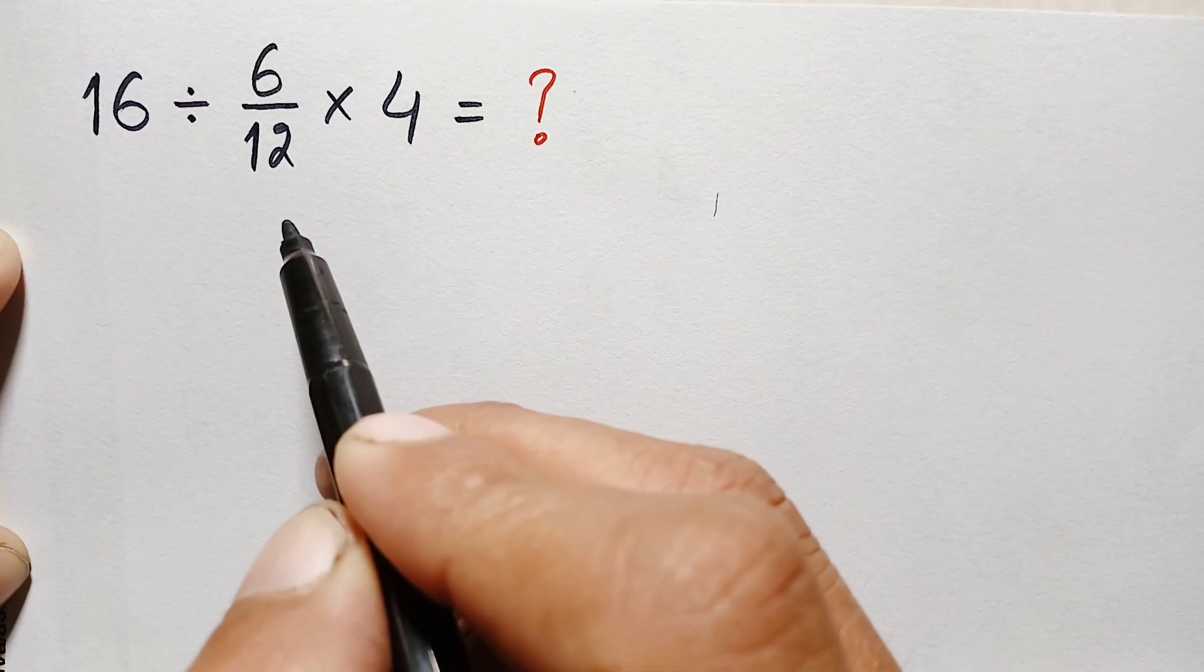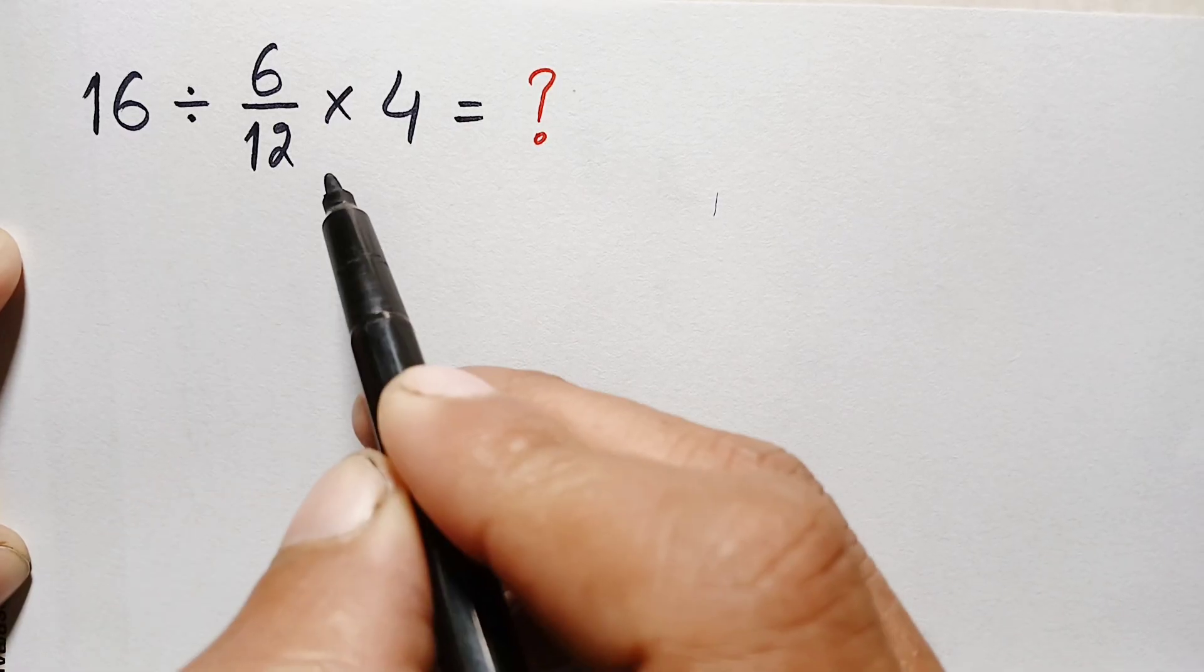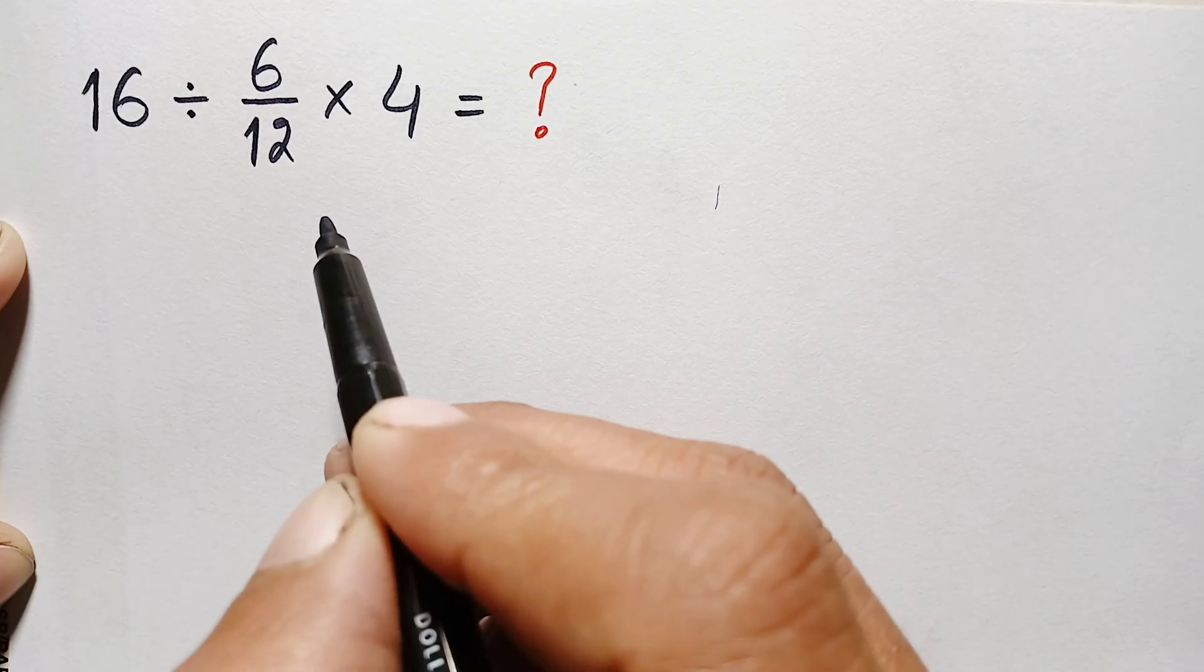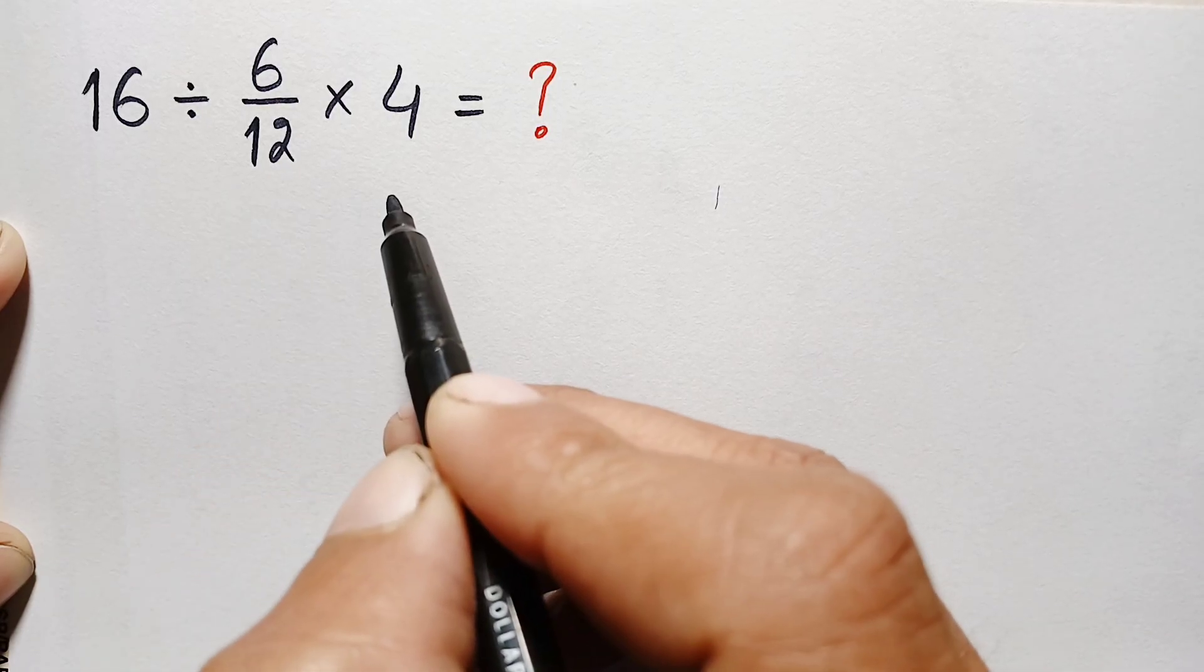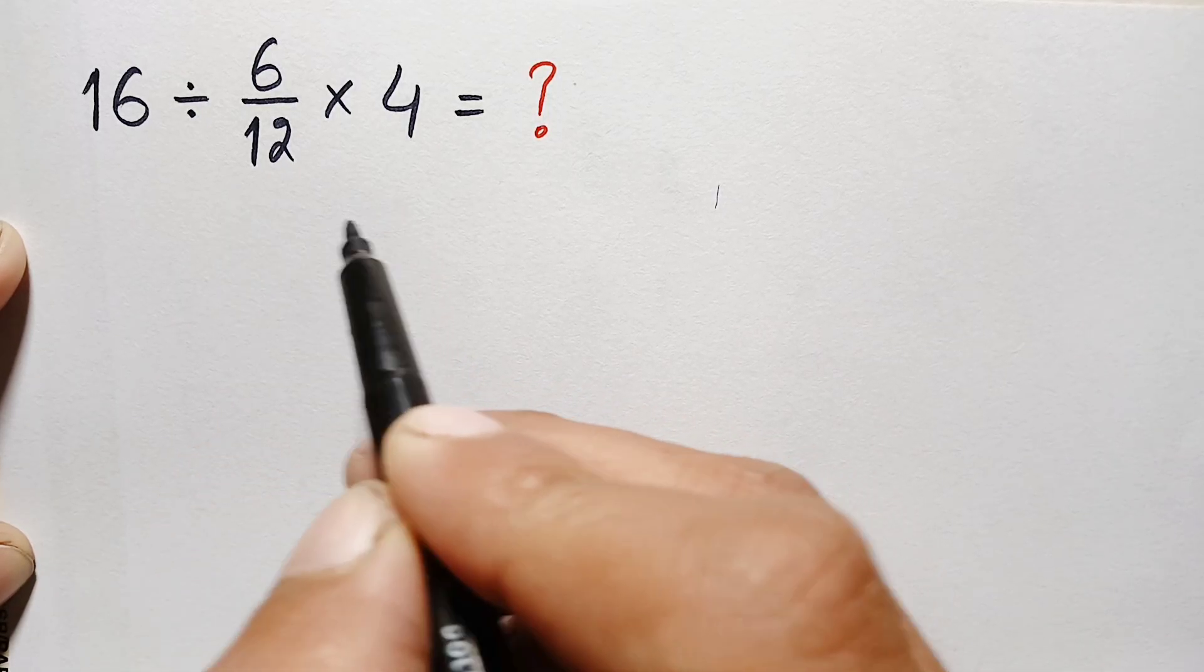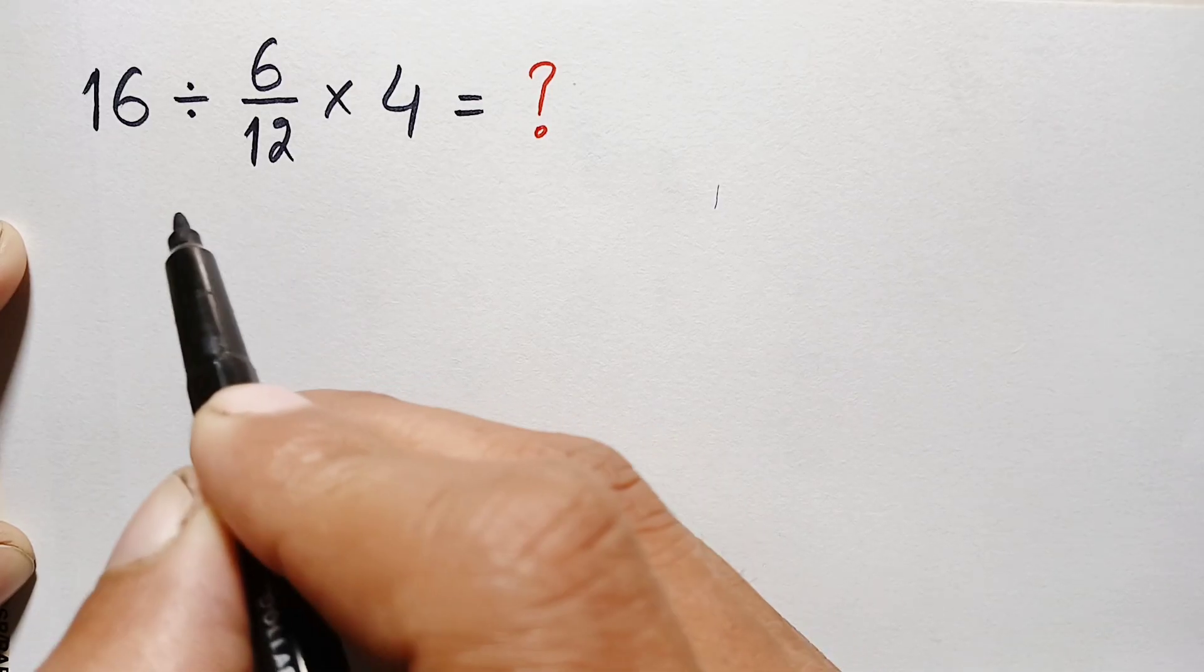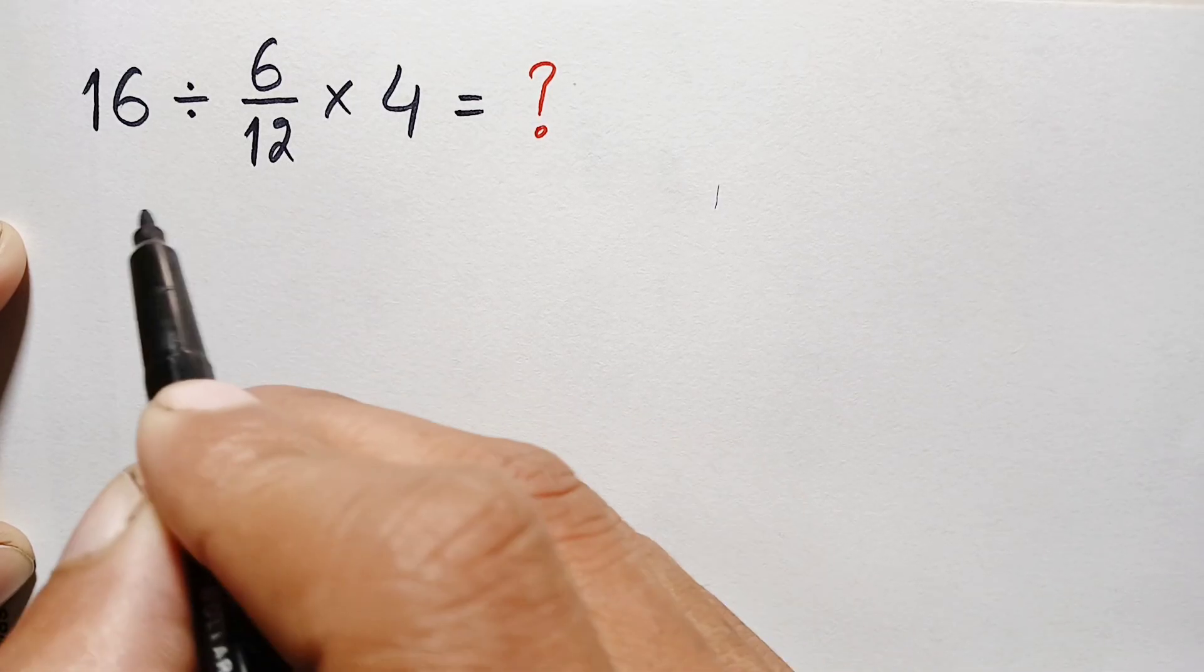Looking at the problem, we have two operations: division and multiplication. According to the order of operations rule, if we try multiplication first we will get the wrong answer, and if we try division first we will get the correct answer because we have to do division or multiplication from left to right.